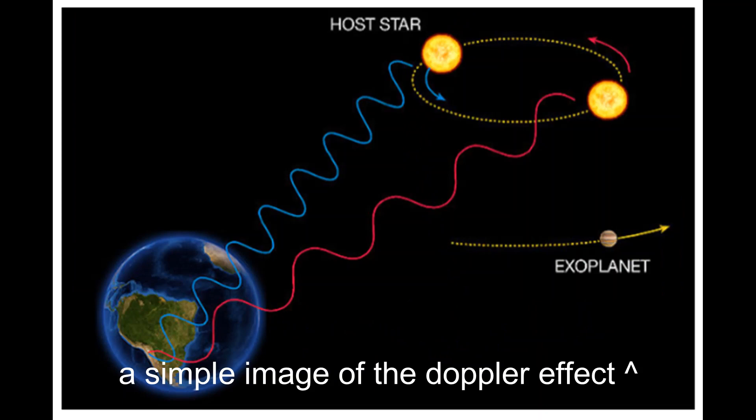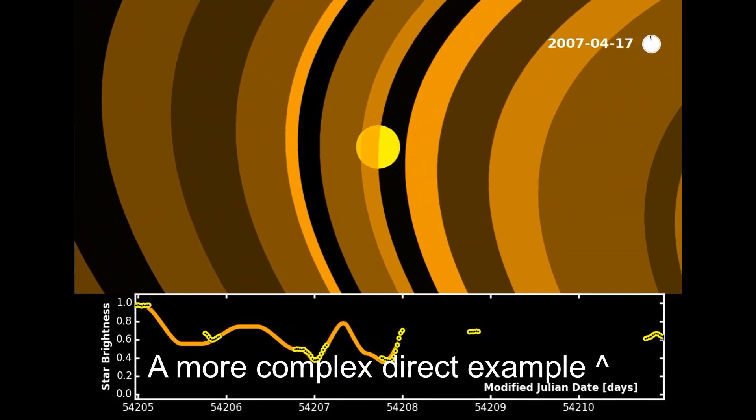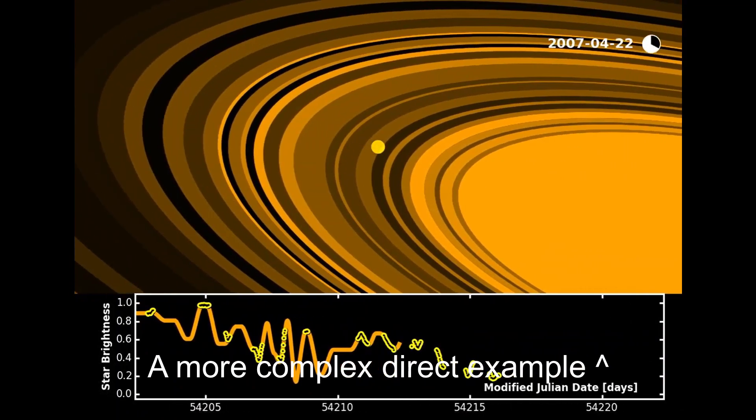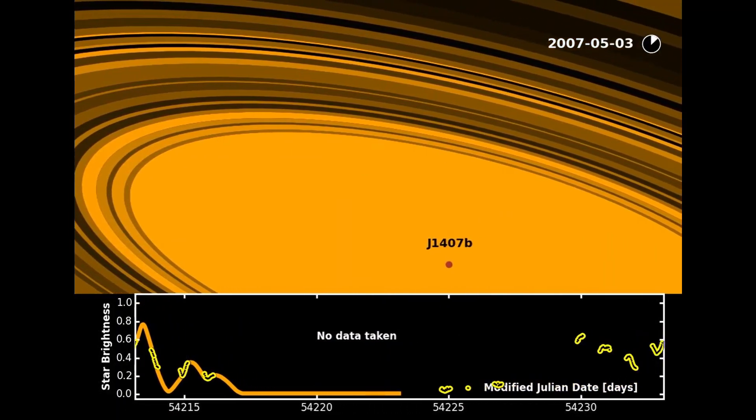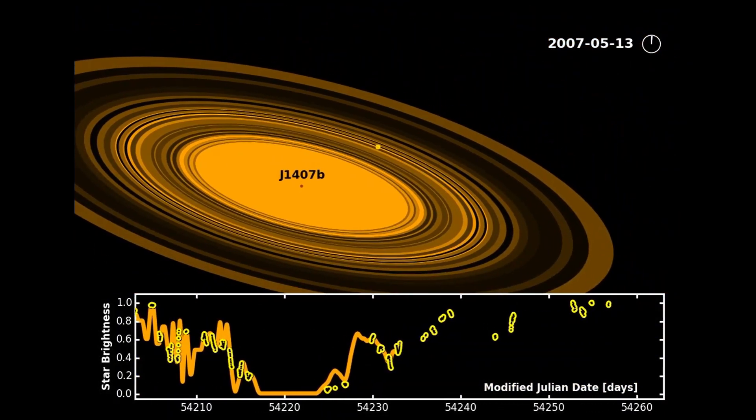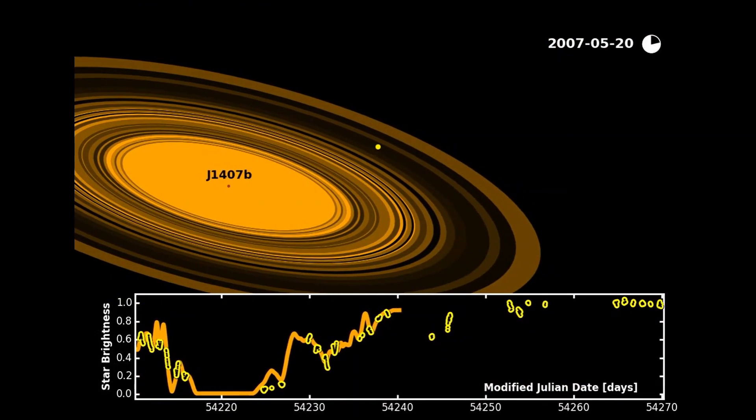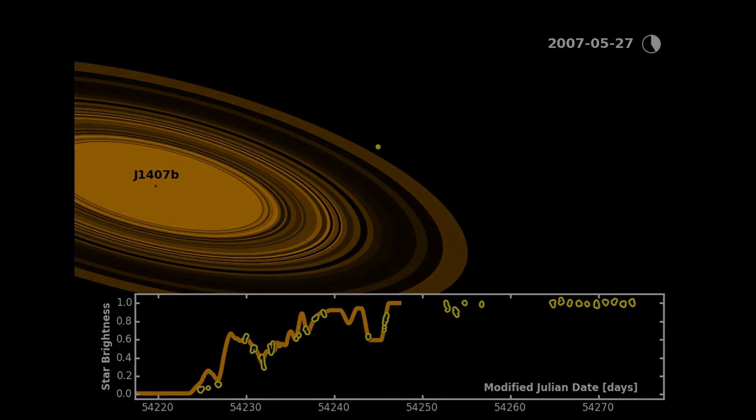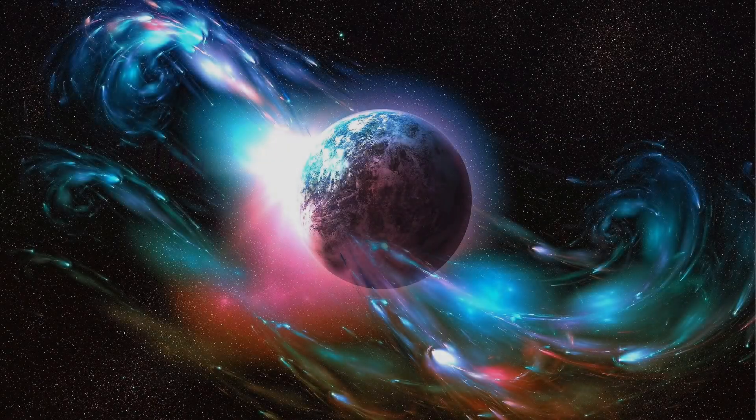In a third, more recent study also led by Kenworthy, adaptive optics and Doppler spectroscopy were used to estimate the mass of the ringed object. Their conclusions based on these and previous papers on the intriguing system J1407 is that the companion is likely to be a giant planet.